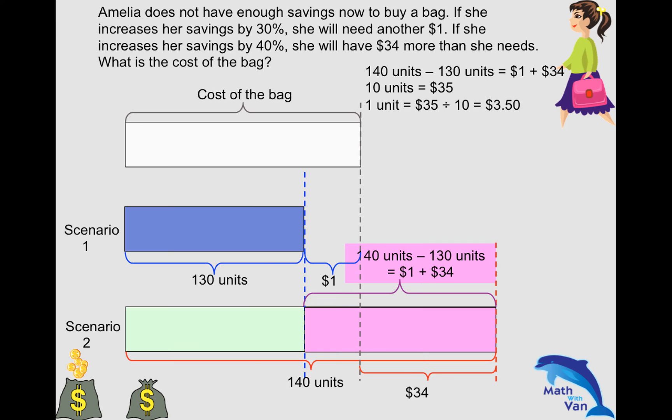Re-expressing this: 10 units equals one dollar plus 34 dollars, which gives 35 dollars. We can then work out what one unit is. To find the cost of the bag, you can use either scenario — use scenario one and then scenario two to check. Using scenario one, remember she is short of one dollar, so you have to add back one dollar after finding 130 units. The model makes this very clear and helpful.